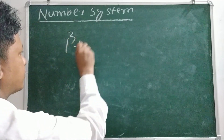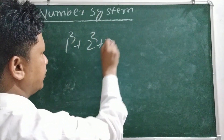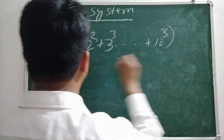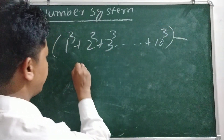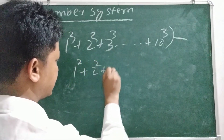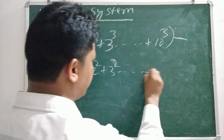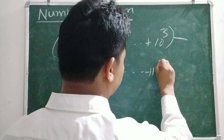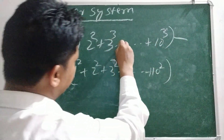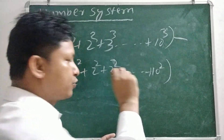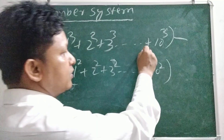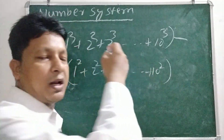One cubed plus two cubed plus three cubed, dot dot dot, plus ten cubed minus: one squared plus two squared plus three squared, dot dot dot, plus ten squared. This is how we find the difference between the sum of cubes and sum of squares.